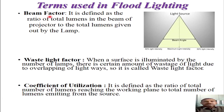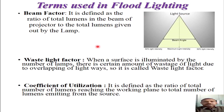The first definition is of beam factor. It is defined as the ratio of total lumens in the beam of the projector to the total lumens given out by the lamp. As shown in the figure, the lamp is fitted in the projector and light rays come out from the projector surface. Whatever lumens come out from the projector surface divided by the lumens produced by the lamp gives the beam factor. Beam factor indicates how efficient the projector and its internal surfaces are.